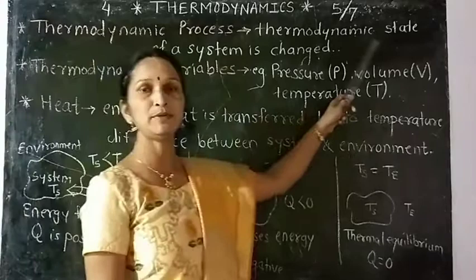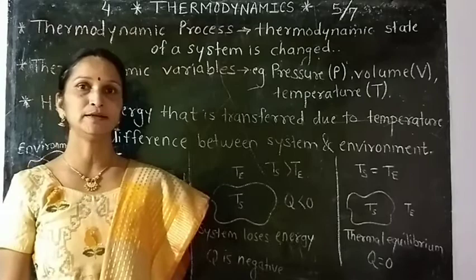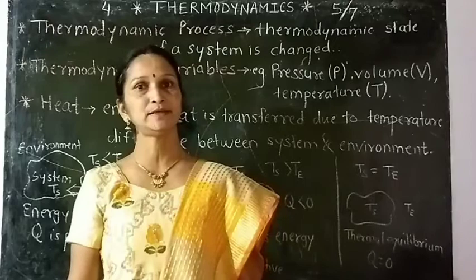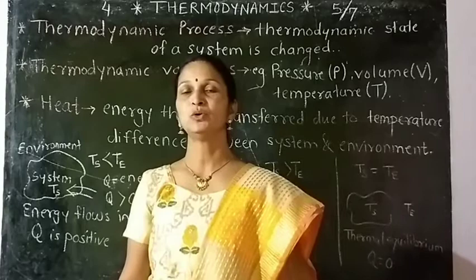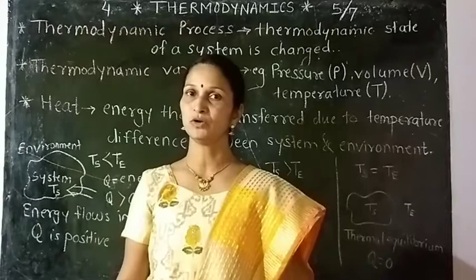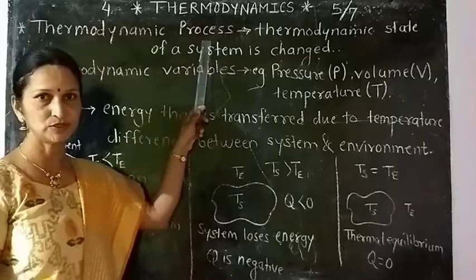The process in which the thermodynamic state of a system is changed is known as a thermodynamic process. For example, consider a vessel containing water. If this vessel is heated externally, that means heat is supplied to the vessel, and water starts boiling. Steam is formed and it exerts pressure on the wall of the vessel. Here, the state of the system is changed — this is a thermodynamic process.